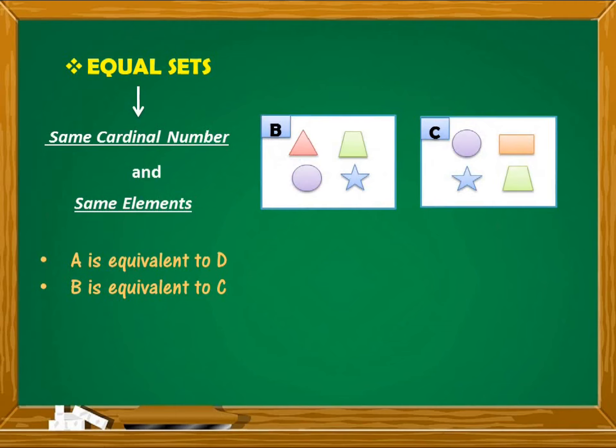How about B and C? Set B contains elements of different shapes such as triangle, trapezoid, circle, and star. And set C has elements circle, rectangle, star, and trapezoid. Meron silang elements na hindi magkatulad. Sets B and C are equivalent, pareho ng bilang, but not equal. Set B is not equal to set C.